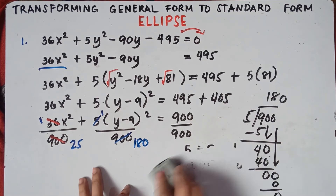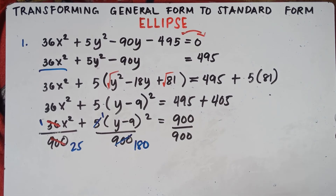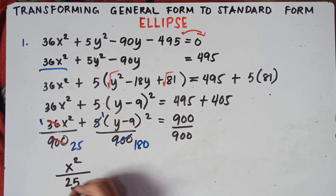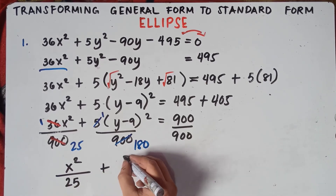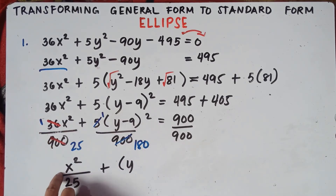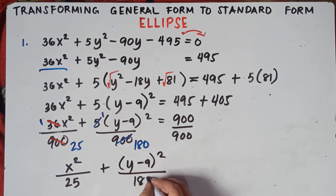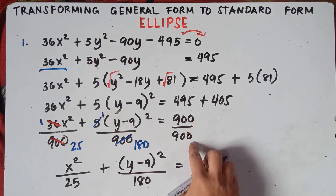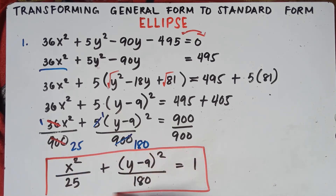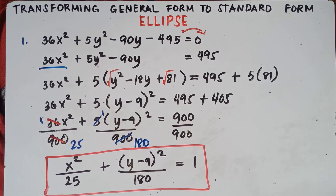So the final standard form equation is: x squared over 25 plus quantity y minus 9 squared over 180 equals 1. This is the standard form of the given general equation.